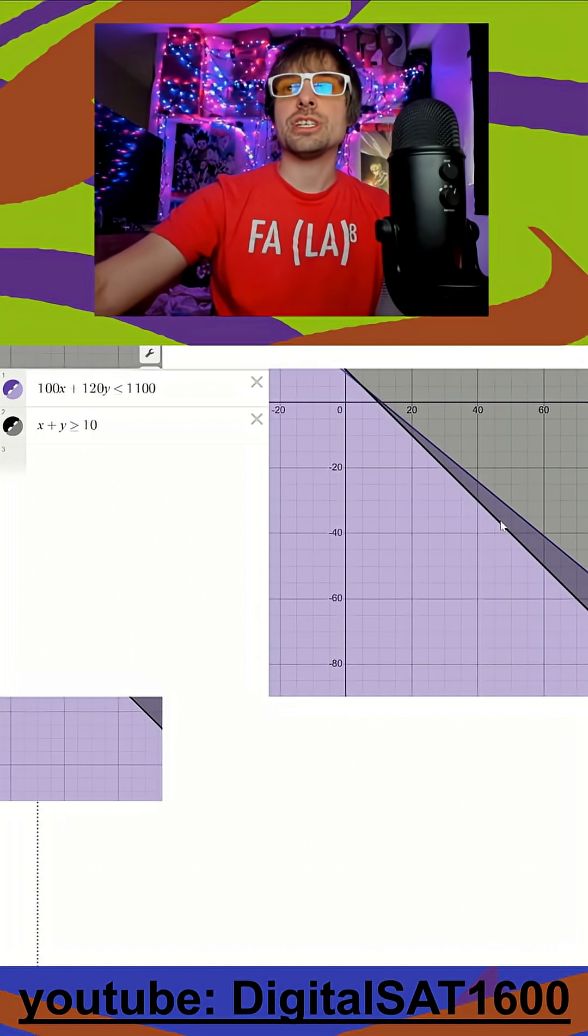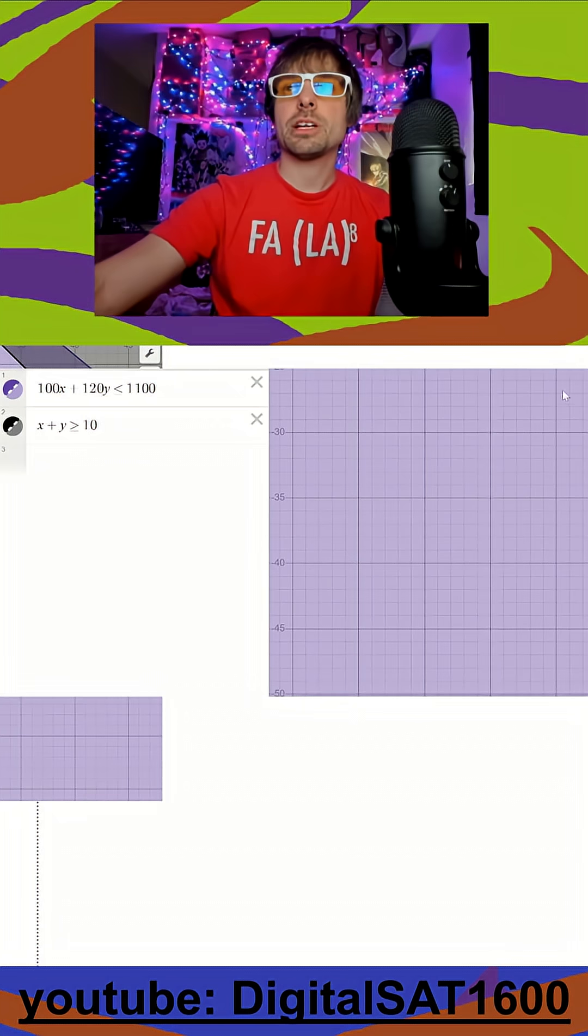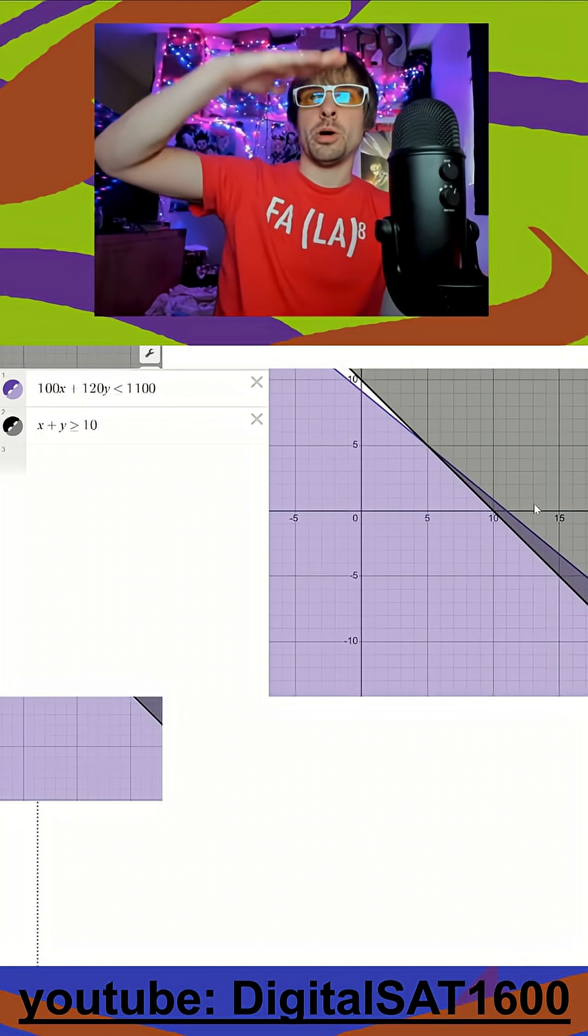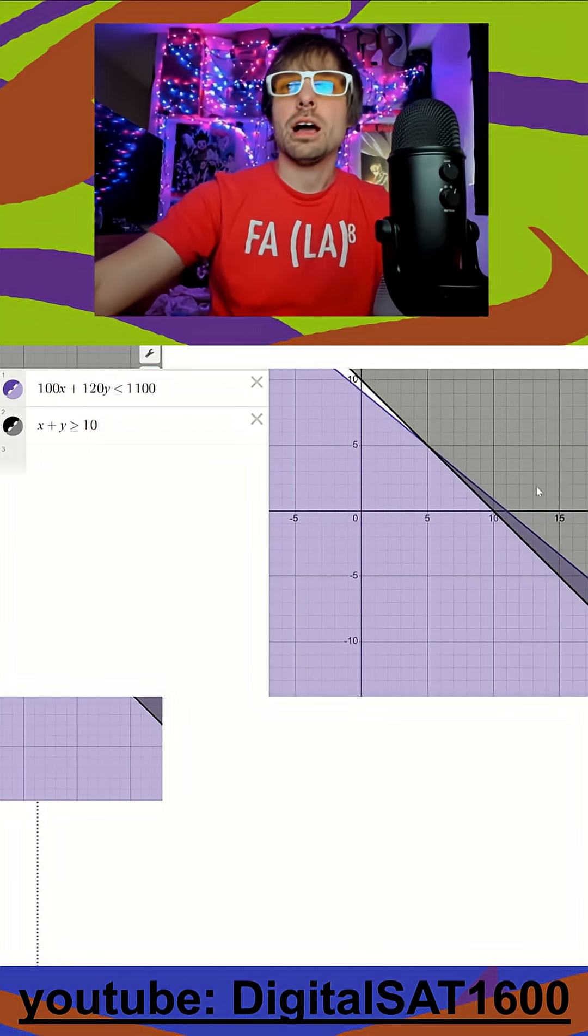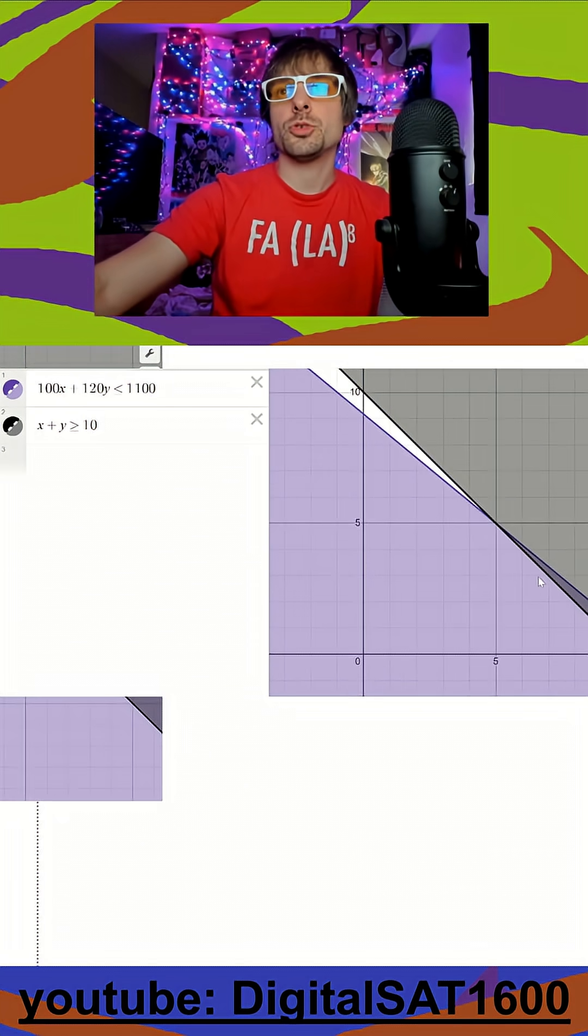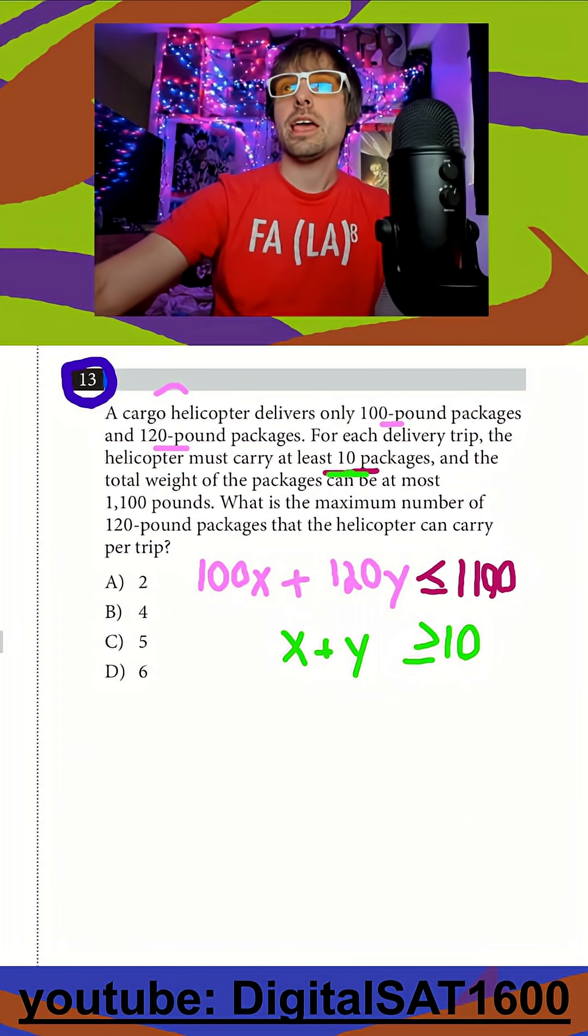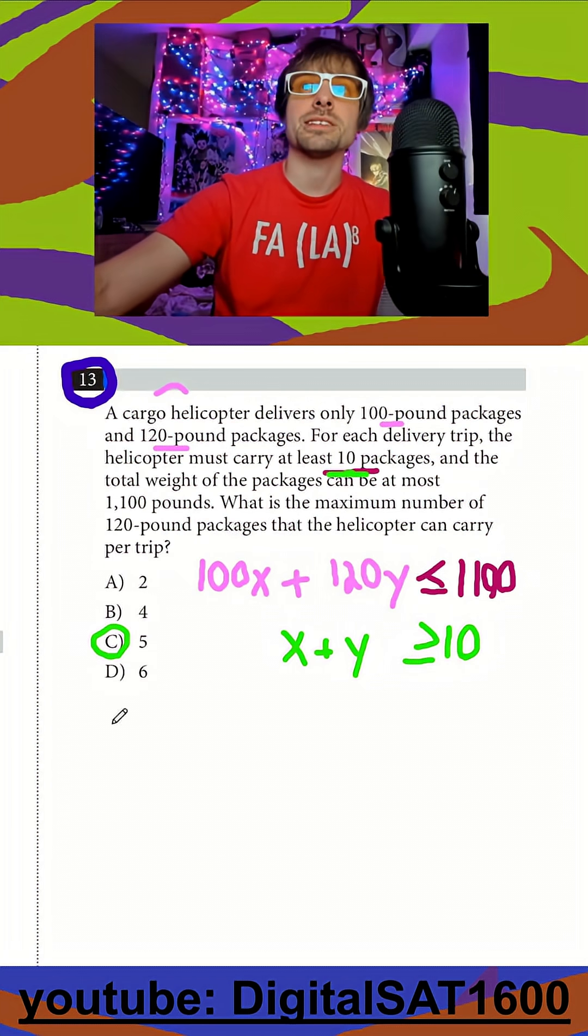So remember, your double shaded region here is your solution set. So I'm going to go ahead and zoom in here. And I'm going to try to find the highest, I'm thinking just like a vertical bar or a horizontal bar. I'm trying to think my highest solution here in my y, it looks like it's going to be five here. Let's double check and make sure that's an answer. And it is, it looks like my highest y or 120 pound packages is going to be C, 5.